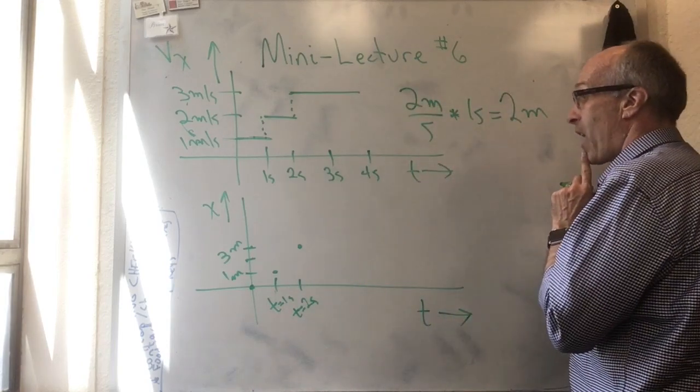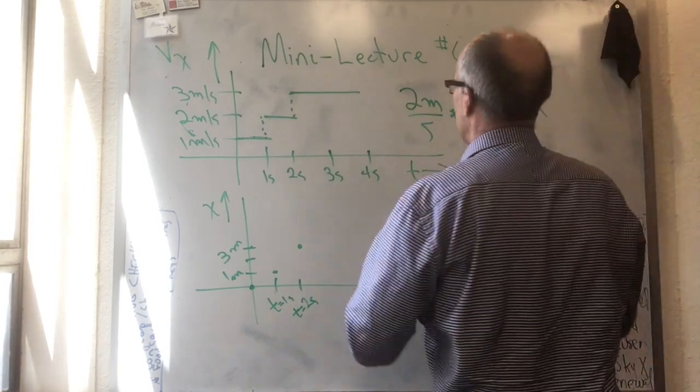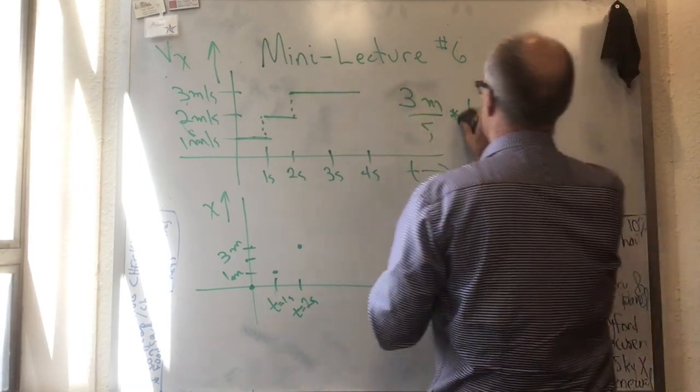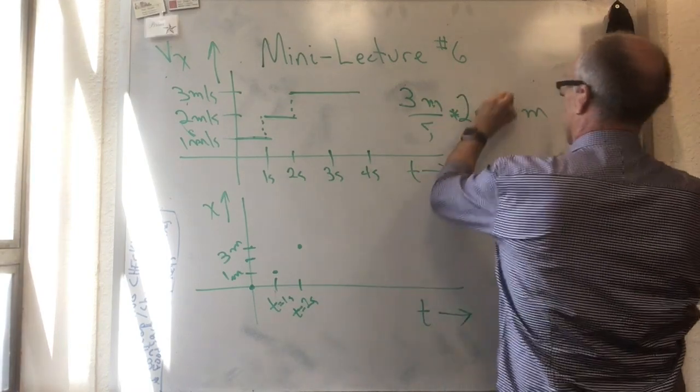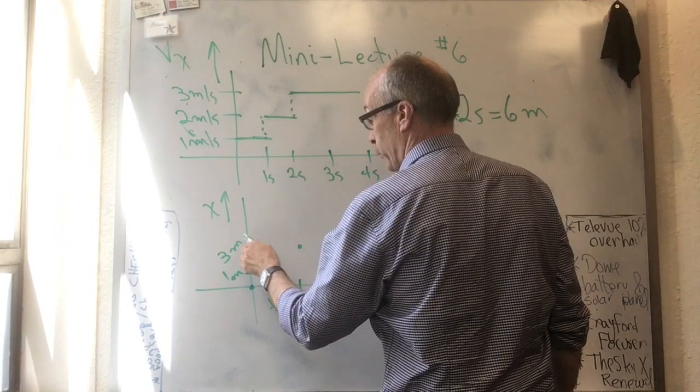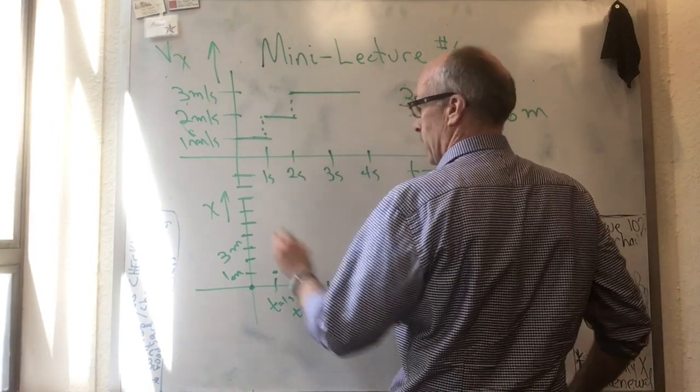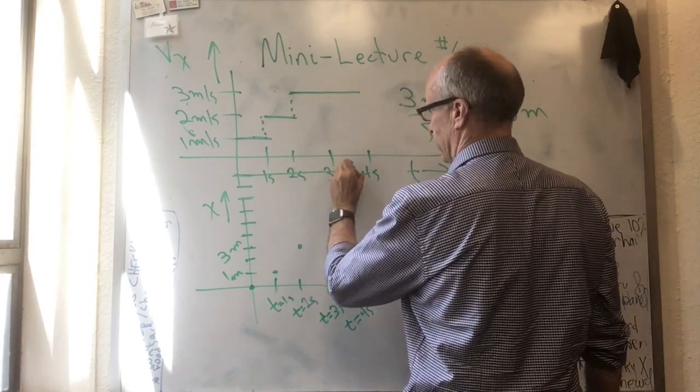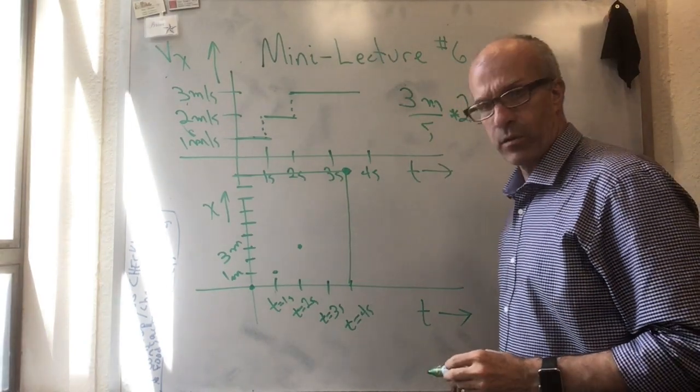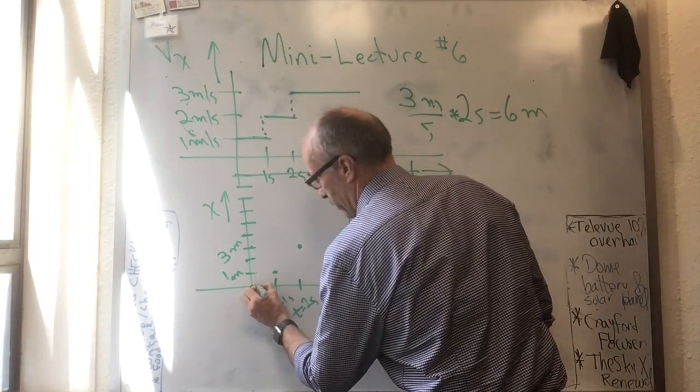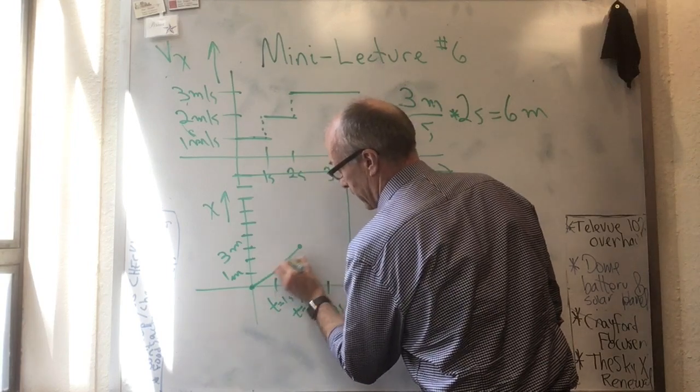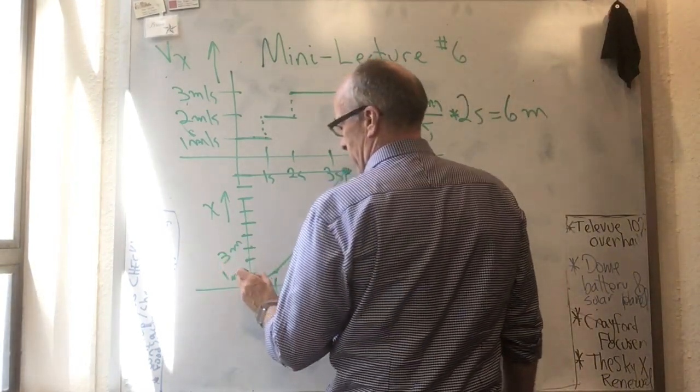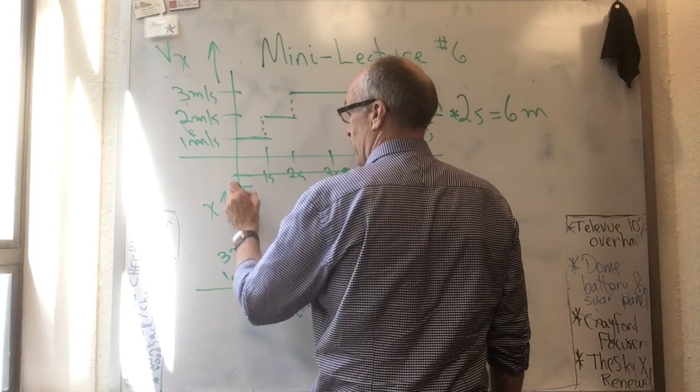And now for the final two seconds, it goes three meters per second. Three meters per second times two more seconds is six meters. So we need six more meters on top of this. So we're at nine at t equals four seconds. Let's draw some straight lines through all that stuff. There's what's happened for the first second, the second second, and the third section. This is one meter, two meters, three meters, four meters, five meters, six meters, seven meters, eight meters, nine meters.